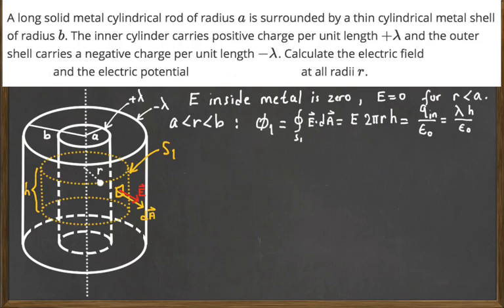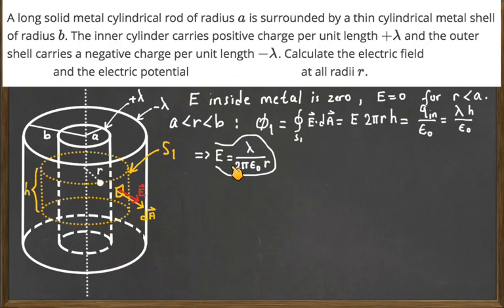By Gauss's law, this flux must equal the charge inside divided by epsilon-zero. Since the height of the cylinder is h, the charge inside the Gaussian surface is h times lambda. From this we solve for E: E equals lambda divided by 2π epsilon-zero times r. So in the region between the two cylinders, the electric field decays as 1/r as you move away from the central axis.